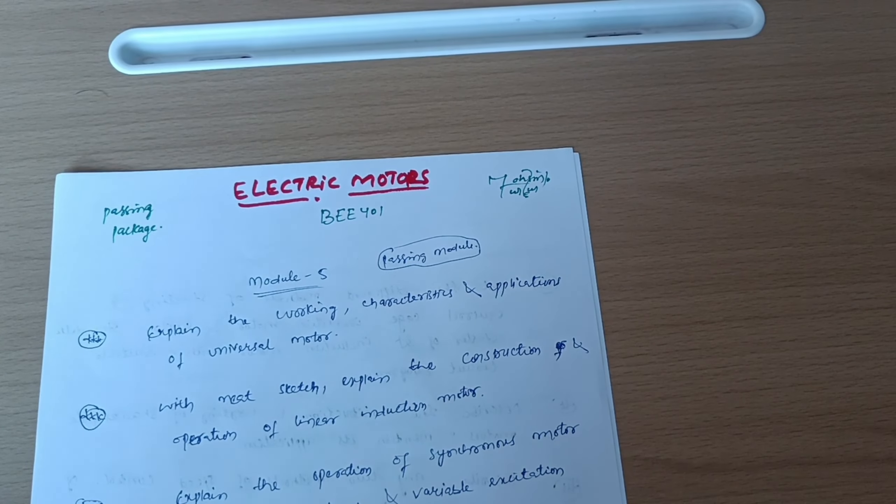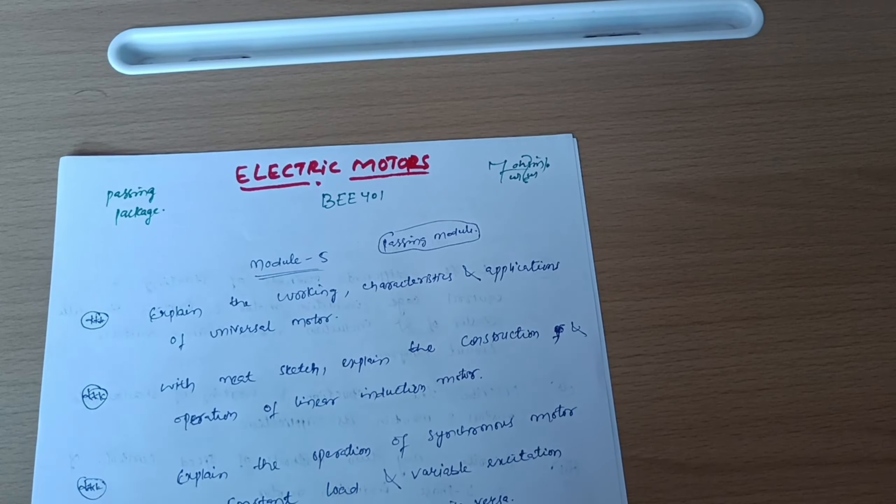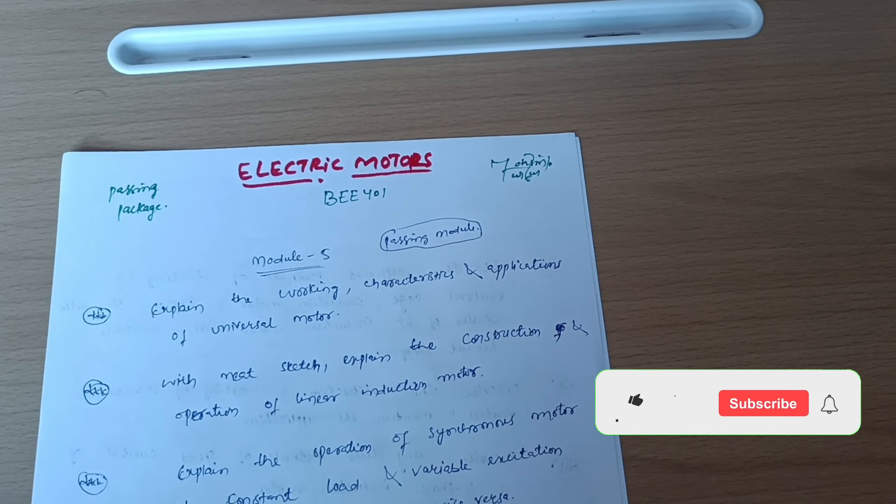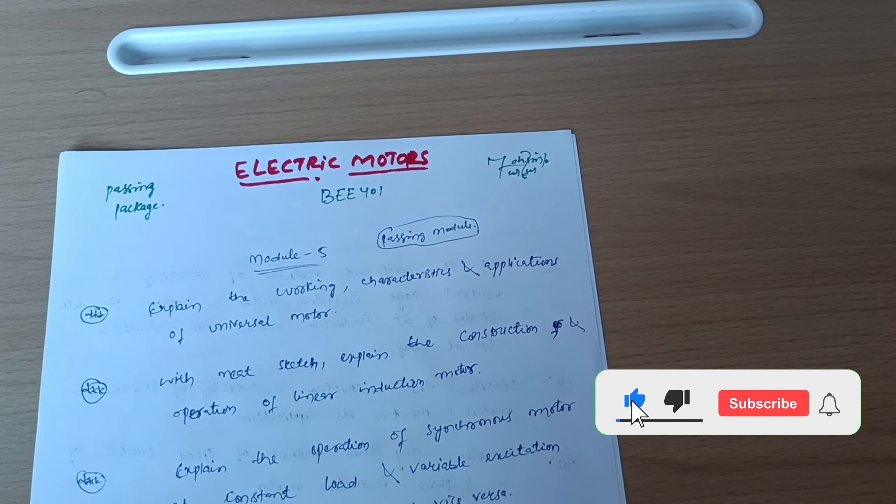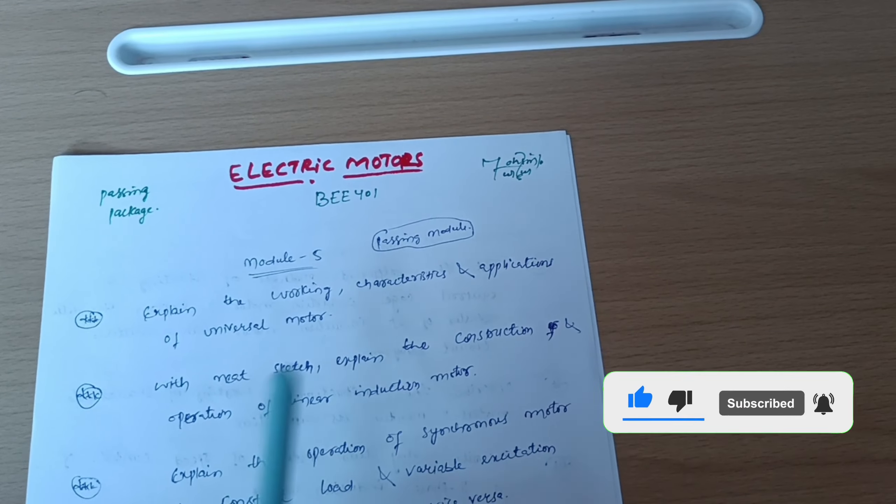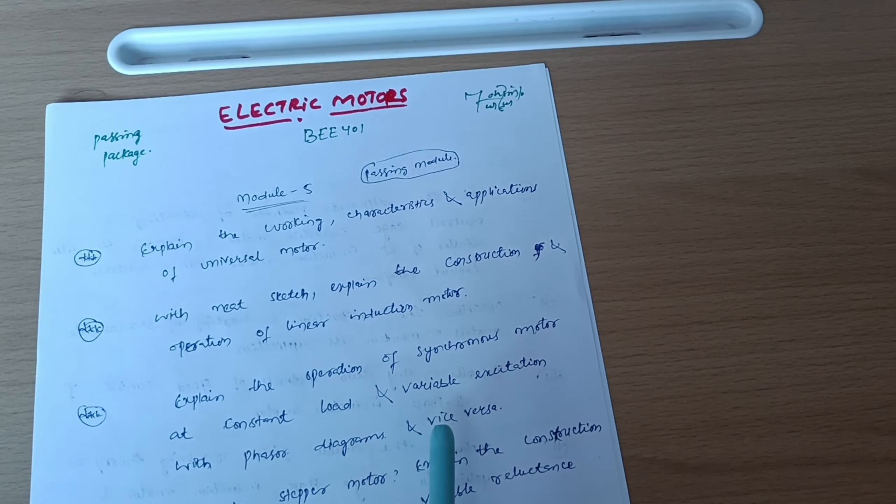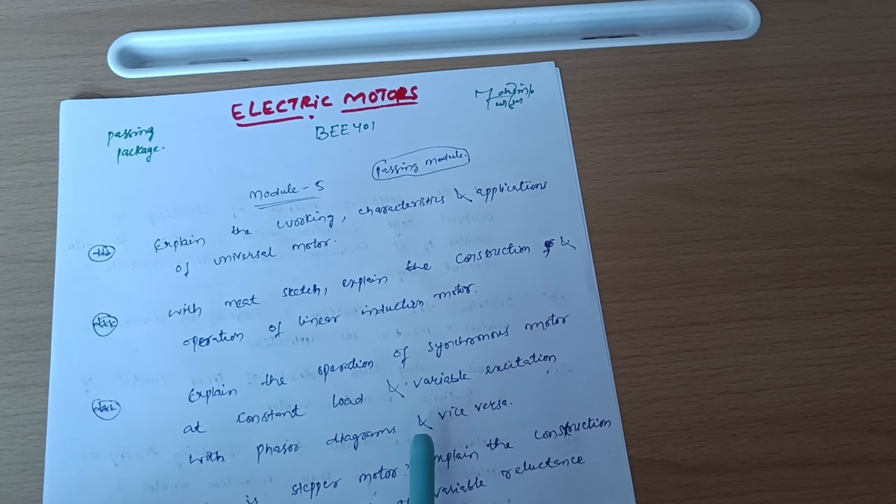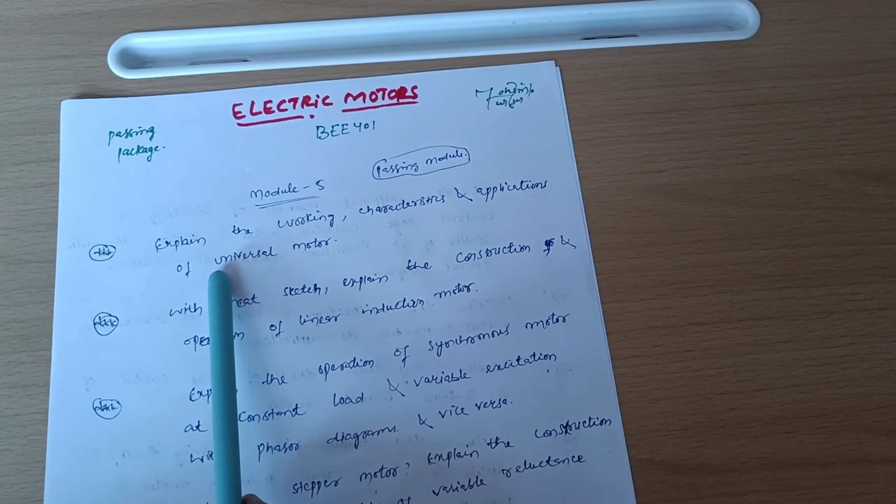That is why I am with the passing package for your first core subject, electric motors. As your examinations are very near, you should be fully prepared to clear the subjects in the first attempt itself. Let me discuss some passing modules. First of all, let's start with Module 5, which is a passing module. If you cover this much portion, you will at least get 15 marks, or sometimes 20 marks also.